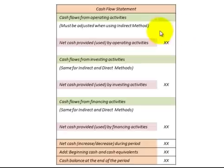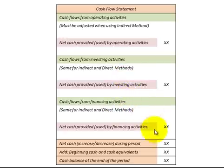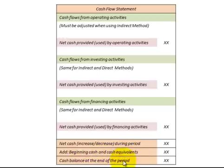Here's a complete cash flow statement with operating activities summarized, followed by investing and financing activities each summarized. We then take our net cash increase or decrease during the period, add the beginning cash or cash equivalents, and that gives us our cash balance at the end of the period.